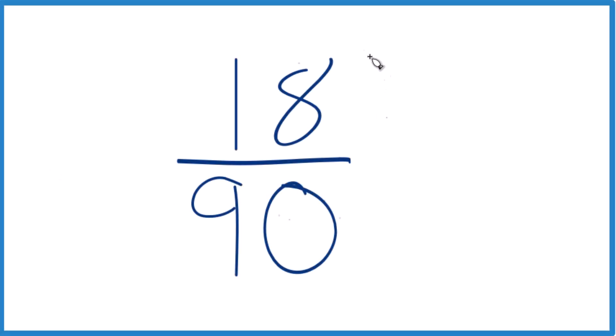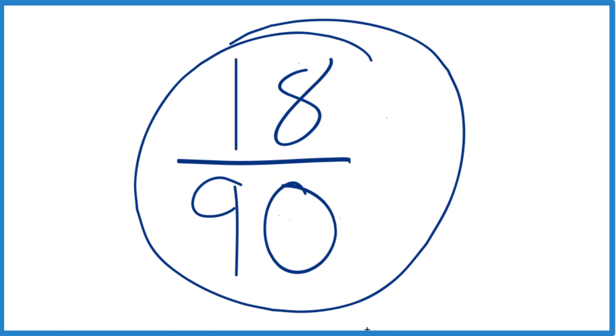If you need to simplify the fraction 18 90ths, that's 18 over 90, here's how you do it.